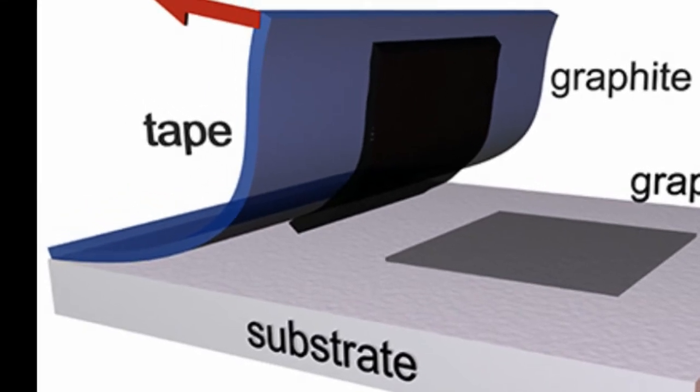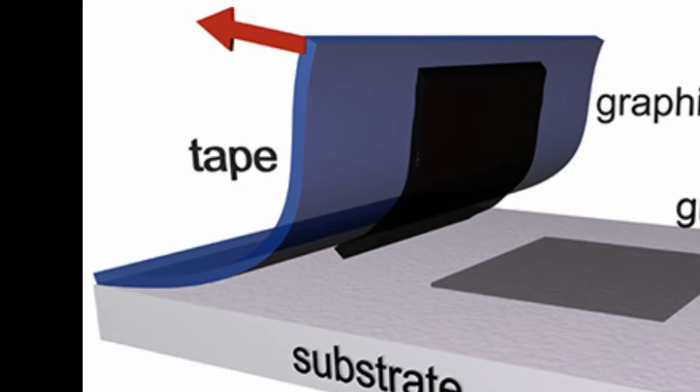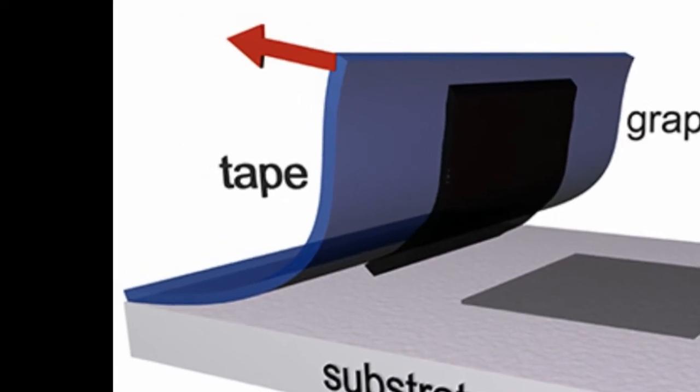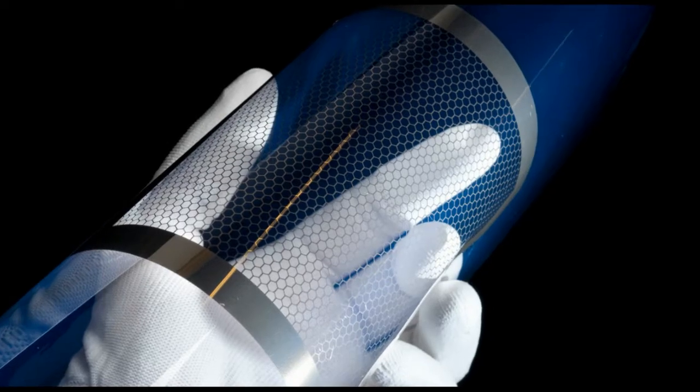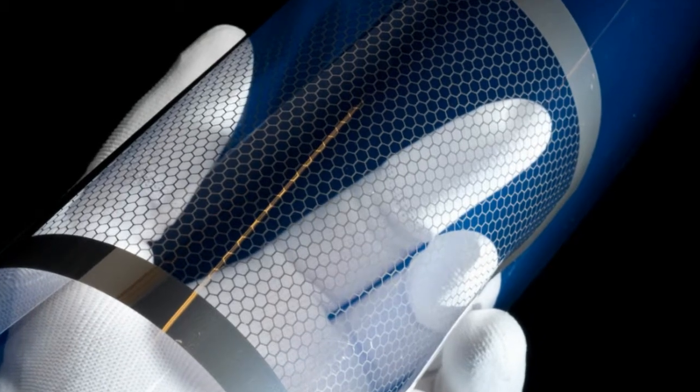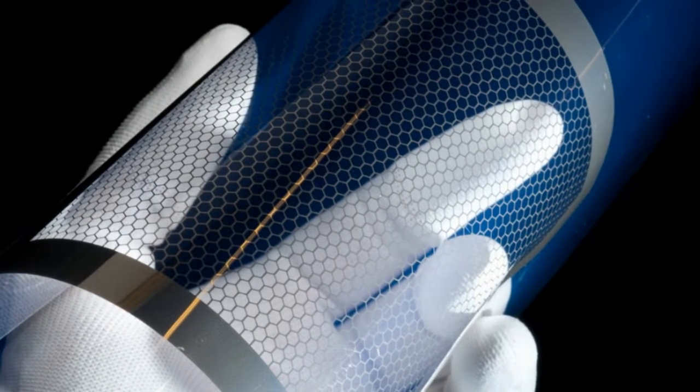The process can produce precise patterns as small as 5 millionths of a meter wide, just a 20th of the diameter of the average human hair. Dong said making the patterns so small increases the sensitivity of the sensors.